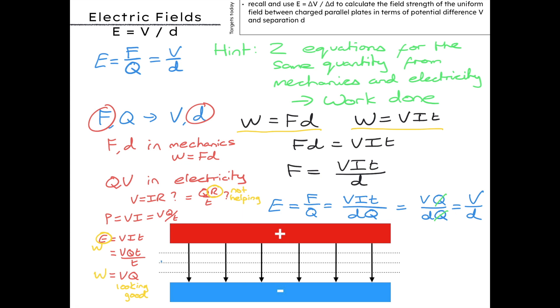Or F over Q equals V over D. And suddenly we have an answer. We've shown almost by accident that E equals F over Q equals V over D.